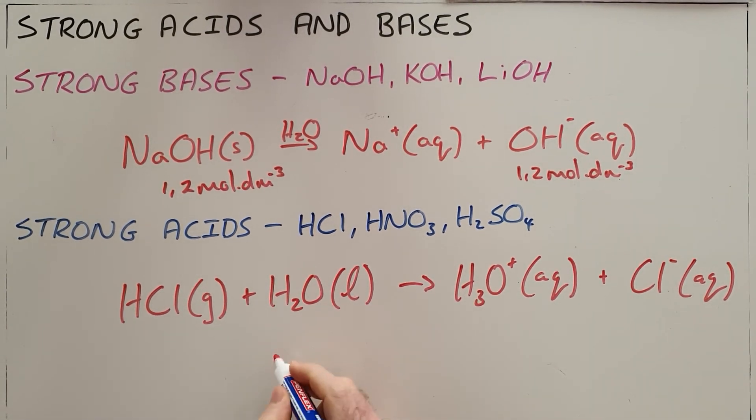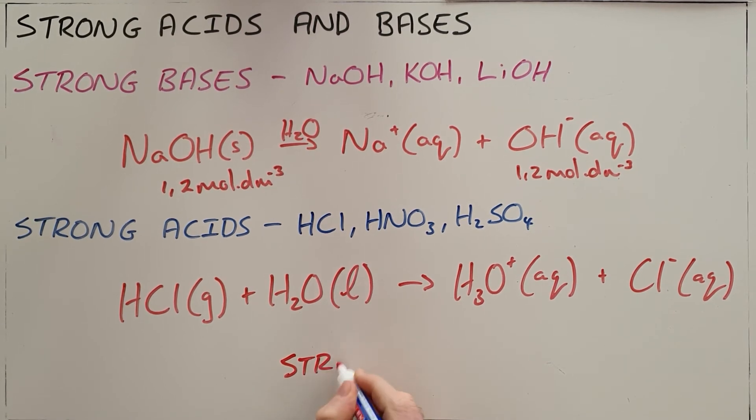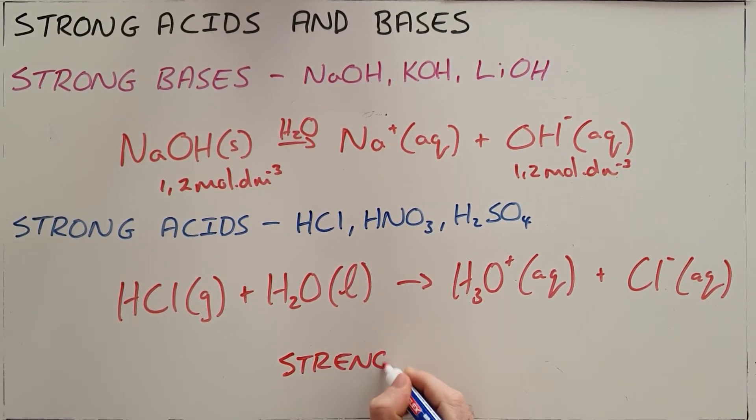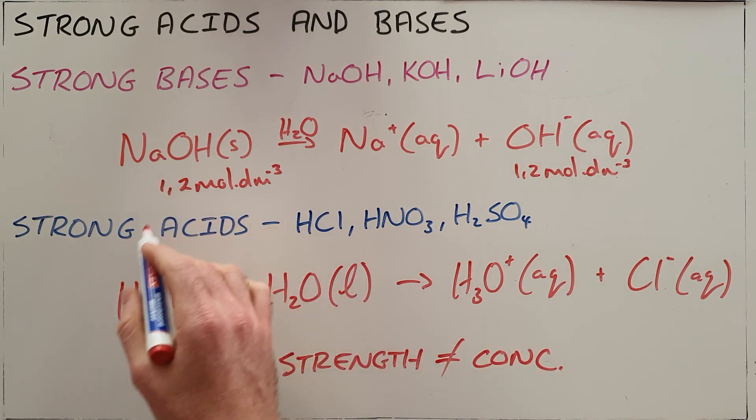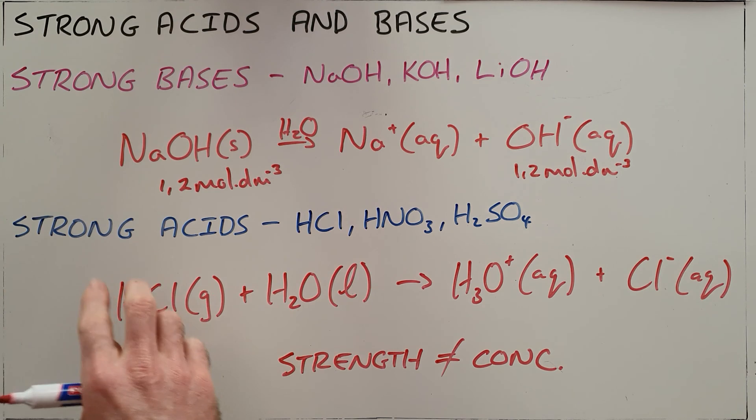It is important to realise here that the strength of an acid is completely independent of the concentration of that acid or base. So it is possible to have a very low concentration of a strong acid or a strong base. All that that would mean is that it is still completely ionised or dissociated in water. Whereas when we say that we have a high concentration we are just saying there is a large number of moles per cubic decimetre of that substance present.